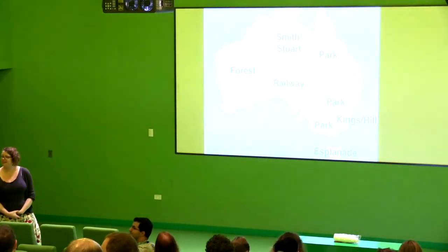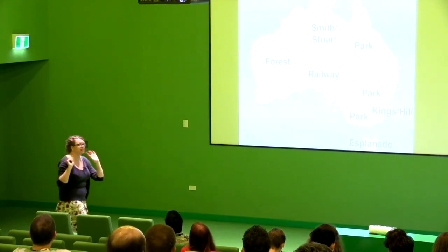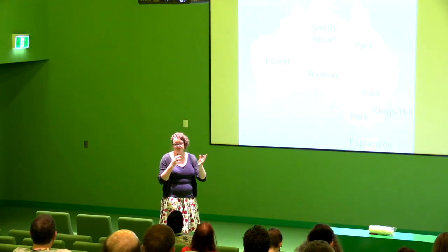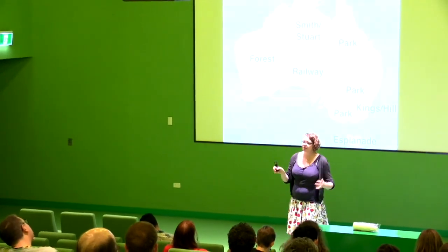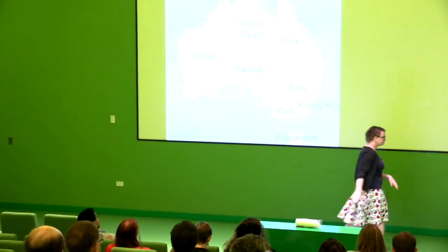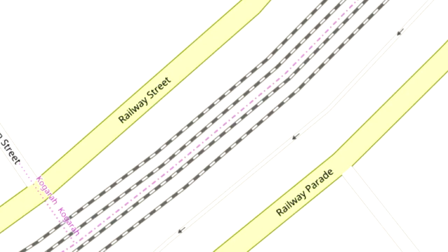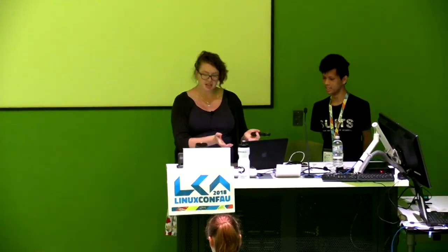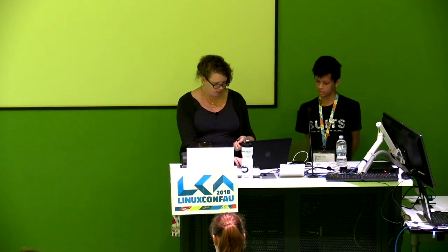Is it possible that misspellings or data issues could change the order of the most common street names? It could be possible, but there was at least a 20-street difference between most entries in the top five. There are 693 Park Streets, 551 George Streets, 497 Church Streets. So I don't think it's likely to change much with misspellings. As for whether the misspellings were from the map contributors or the street namers — I think it's probably the contributors, as they're fairly obvious typos. Human error.